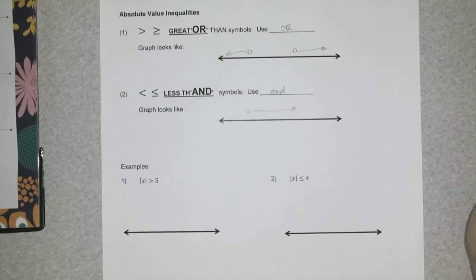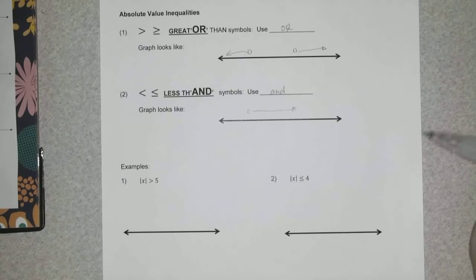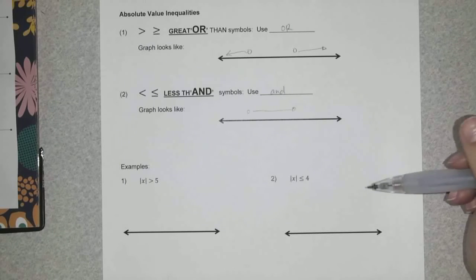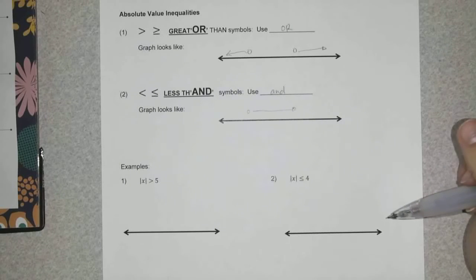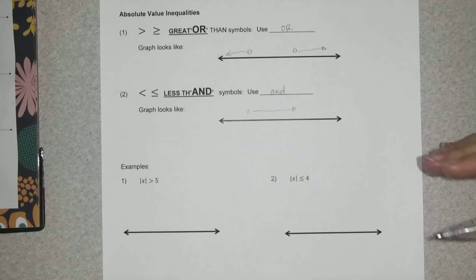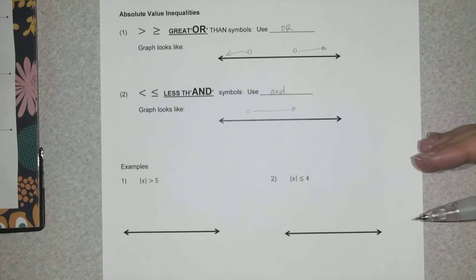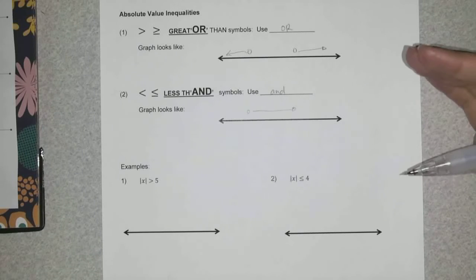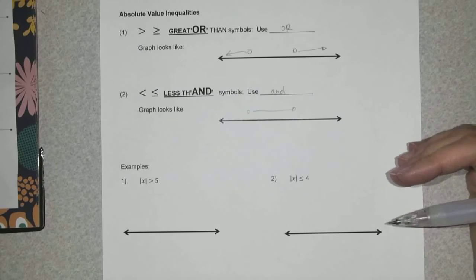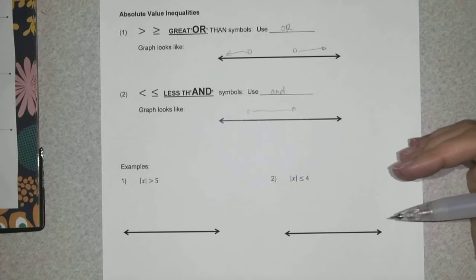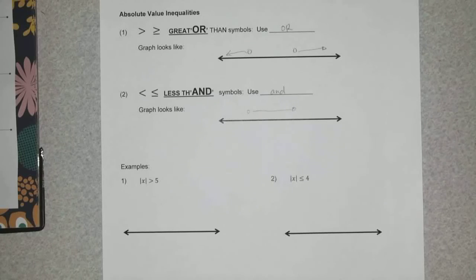For an 'or' inequality, your graph will be shading away from each other — it looks like a pair of arrows pointing outward. For an 'and' inequality, you'll be shading between the two answers that you get. Absolute value inequalities give you compound inequalities, meaning you'll have two answers, and this is typically how your graphs will look with the two different signs.